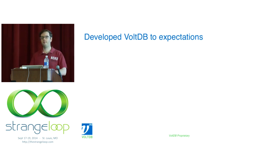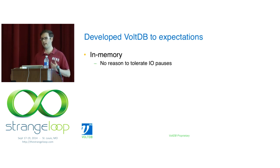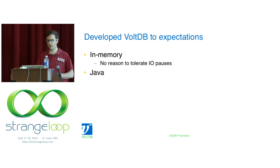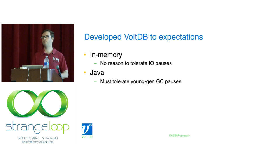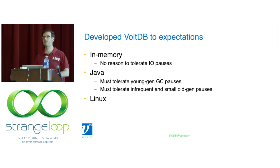For VoltDB, we needed to figure out the limit — what can we aim to accomplish in terms of long-tail latency given our tools and architecture? As an in-memory database, there's no reason to tolerate I/O pauses; we never have to read data from disk. We write data to disk for persistence, but with available RAM it should all be buffered. It's written in Java, meaning we must tolerate young generation GC pauses and less frequent old generation pauses. VoltDB runs on Linux, so we must accept environmental noise from Linux and the hardware.